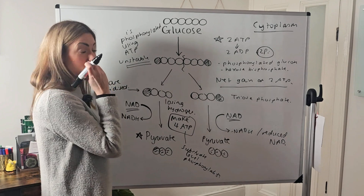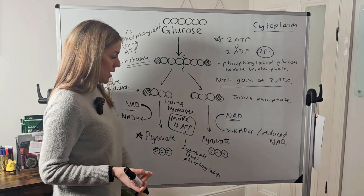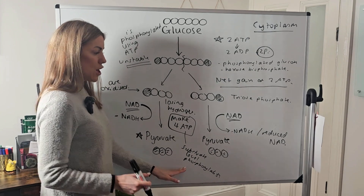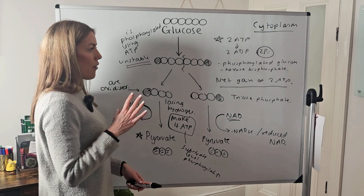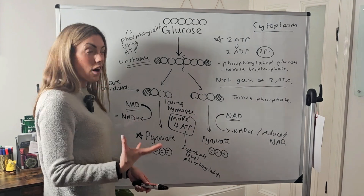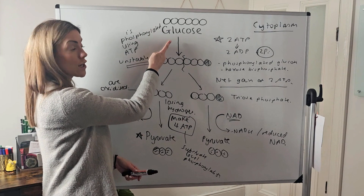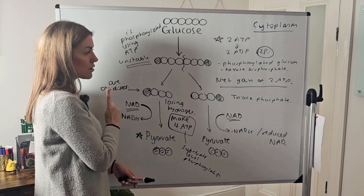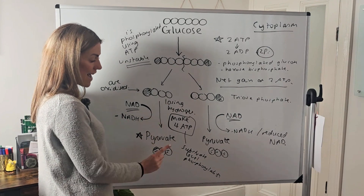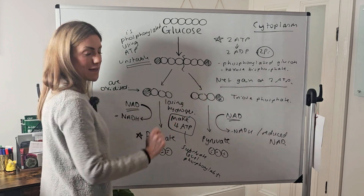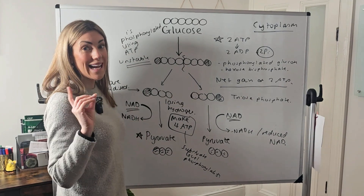The key end products of glycolysis to focus on are: a net gain of two ATP made via substrate-level phosphorylation, two NADH (reduced NAD), and two pyruvates. The key marking points are: phosphorylating glucose using ATP, the oxidation of triose phosphate, the production of reduced NAD and pyruvate, and the net gain of two ATP by substrate-level phosphorylation. All of this occurs in the cytoplasm in both aerobic and anaerobic respiration.